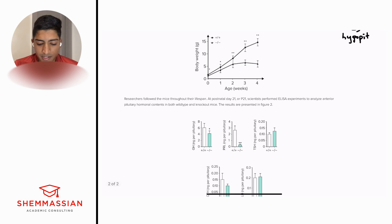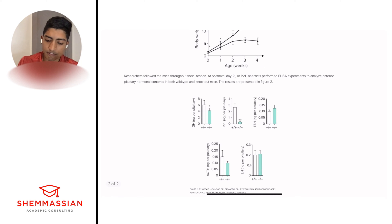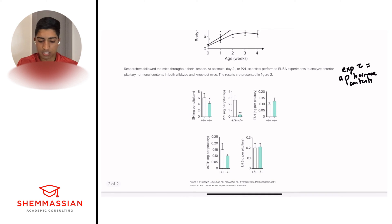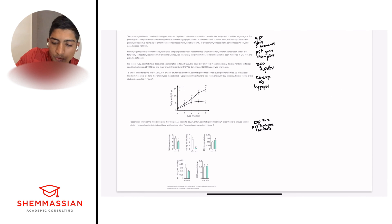Let's go on to the next paragraph. Researchers followed the mice throughout their lifespan. At postnatal day 21 or P21, scientists performed ELISA experiments to analyze anterior pituitary hormonal contents in both wild type and knockout mice. The results are presented in figure two. So this is just experiment two equals AP hormone contents. That's all I really worry about. I'm not going to worry about the details again. We see these graphs. This is an ELISA experiment, so we should have something going in our head, but we're not going to worry about it until we get to the questions themselves.